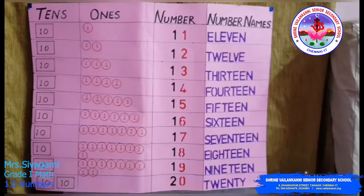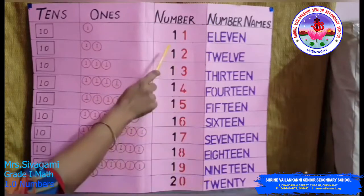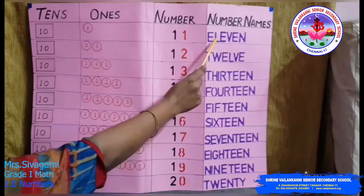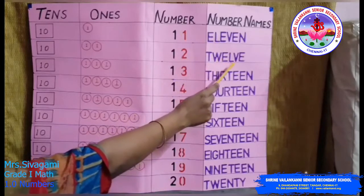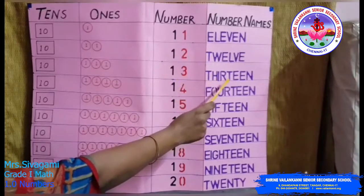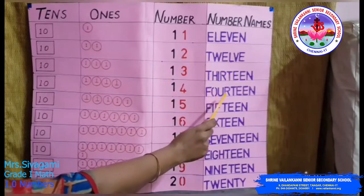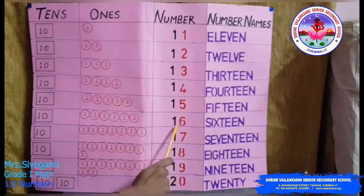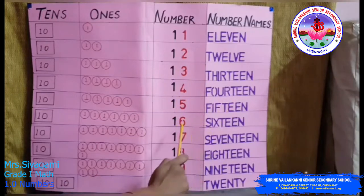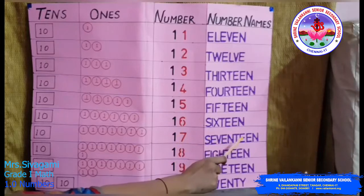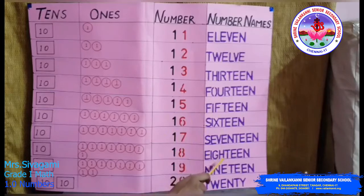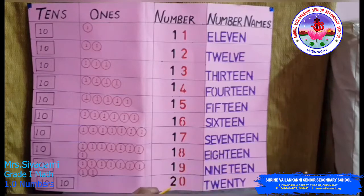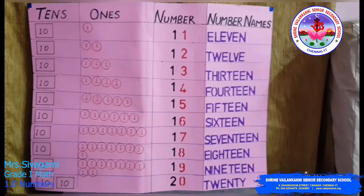Now we will also see the number names of numbers 11 to 20. 11 is eleven, 12 is twelve, 13 is thirteen, 14 is fourteen, 15 is fifteen, 16 is sixteen, 17 is seventeen, 18 is eighteen, 19 is nineteen, and 20 is twenty. You can learn the number names from 11 to 20.